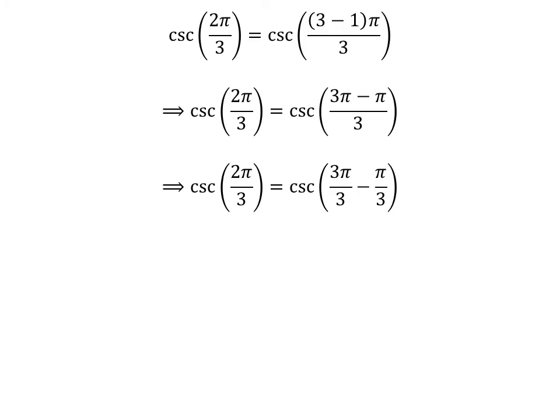The fraction 2 times pi upon 3 can be expressed as difference of two fractions 3 times pi upon 3 and pi upon 3.